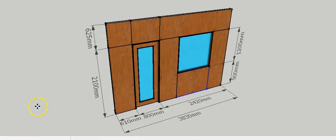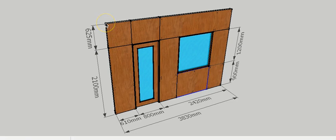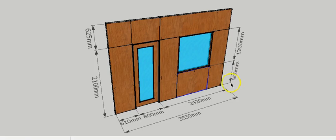Looking at the details of this partition, the total length is 3.83 meters. The height of the partition is 2.1 meters up to lintel level, and above that it is 0.62 meters. There is a door in between which is about 800 mm, and there is a fixed glass located at 0.9 meters from the finish floor level with a height of 1.2 meters.